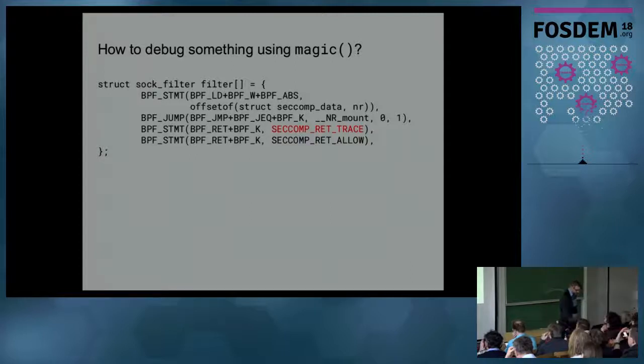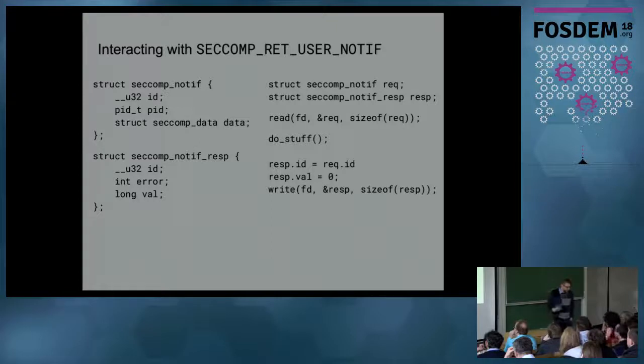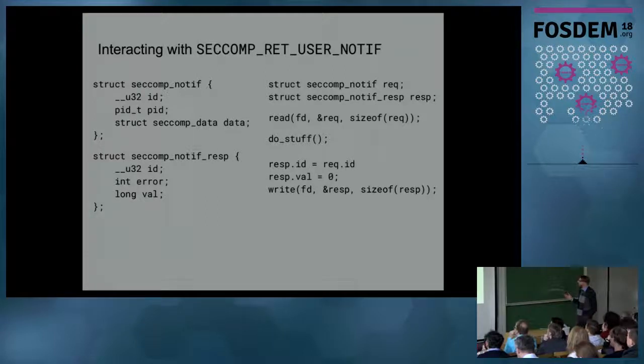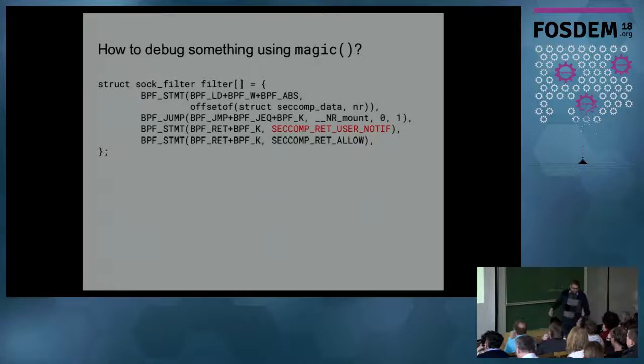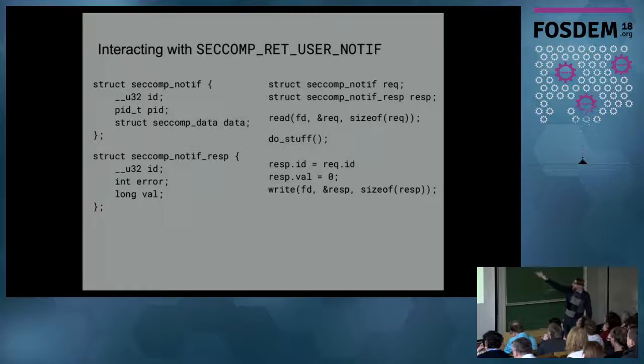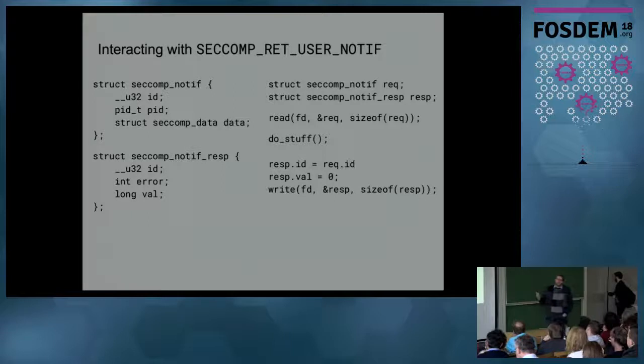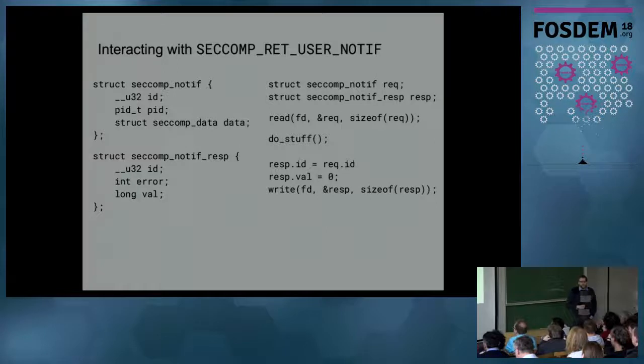So we have, instead of doing a seccomp return trace, we can sort of introduce yet another seccomp return code, which is return user notification. And that basically would trigger this magic to happen. And then how you would interact with that as a programmer who's on the other side is, it's basically, at least in the implementation that I posted, it's just a file descriptor. And so you have two things. You have a notification, the kernel sends you this structure. You have an ID, which is like a little cookie, the process ID of the task that did this, and then the seccomp data. And if you look at this, it's the same structure you get for your eBPF program, this struct seccomp_data, you get basically the same data. And this is important because this seccomp data structure does not expose stuff like actual memory of the process.